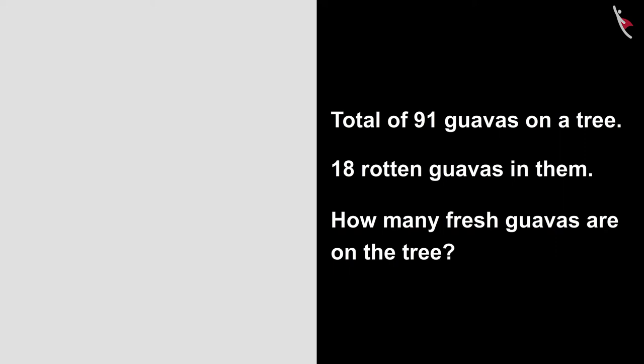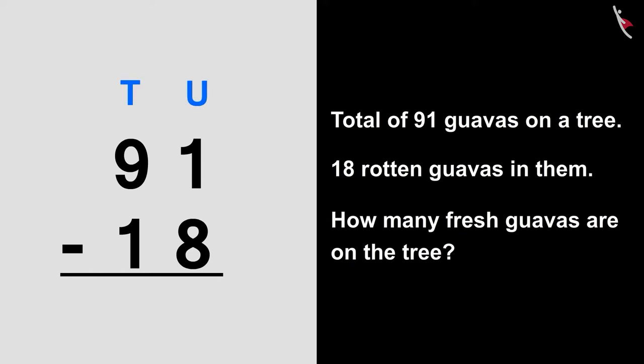There are a total of 91 guavas. And 18 guavas have gone bad. 91 minus 18 is equal to what? Let's find the answer using subtraction.